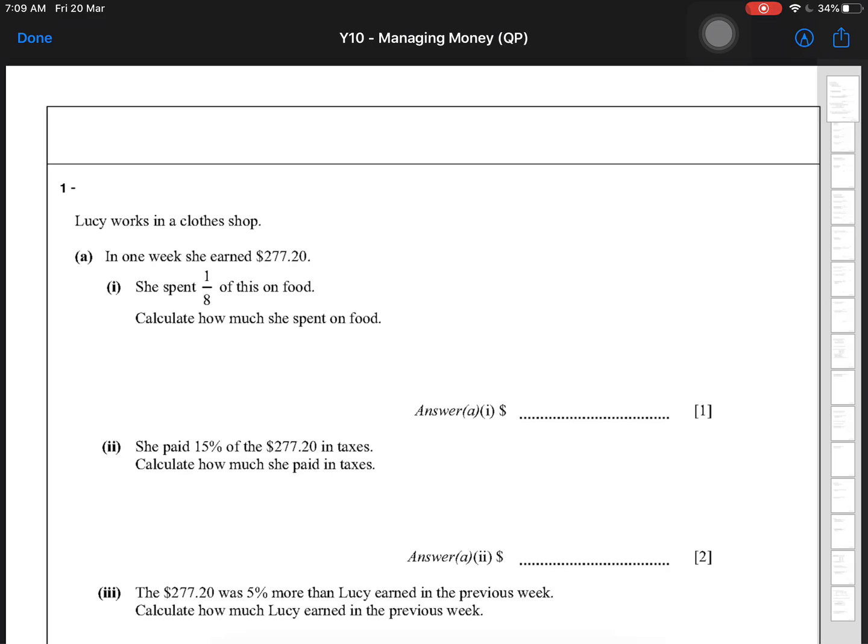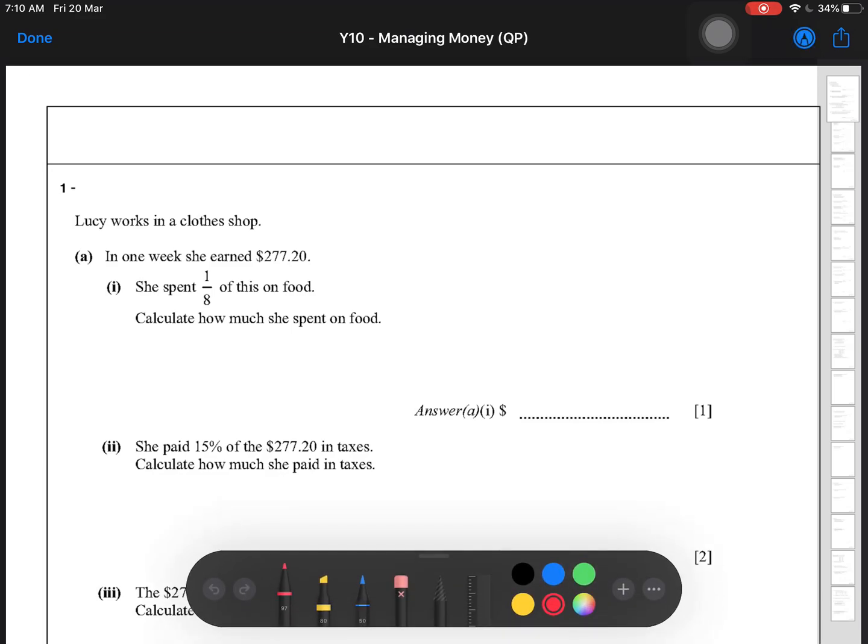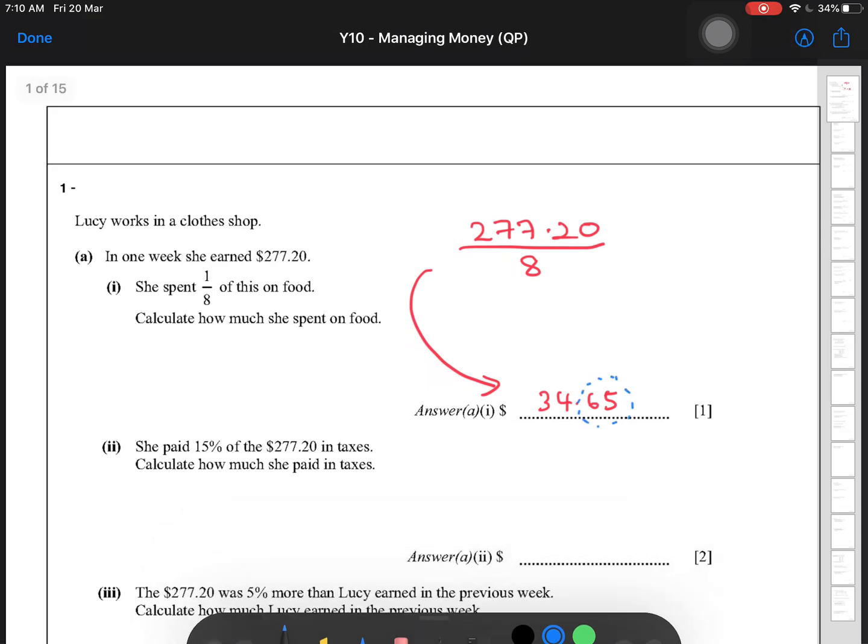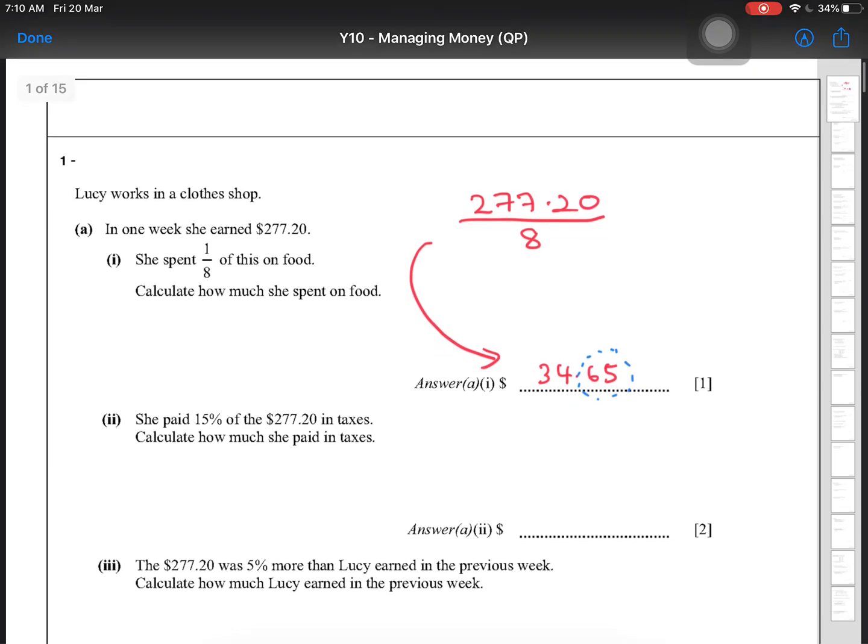Let's start with question 1A. Lucy works in a clothes shop. In one week, she earned $277.20. She spent 1/8 of this on food. How much did she spend on food? So the most straightforward steps of working for this is you take 277.20 divided by 8, and then this will give you 34.65. And please remember, because your answer is in money, you are expected to give your answer correct to two decimal places.